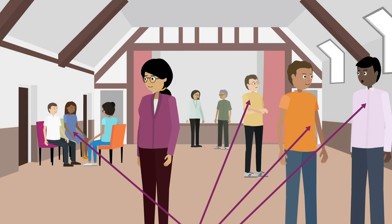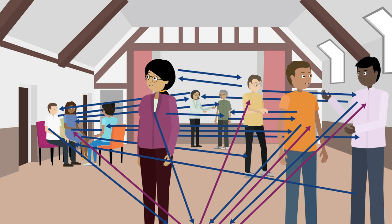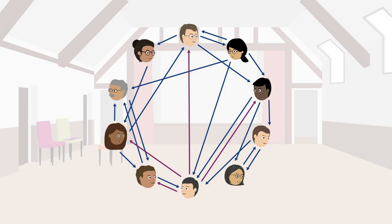Social relationships can be represented by networks. Here, each node represents a person, and the arrows are the relationships connecting them.